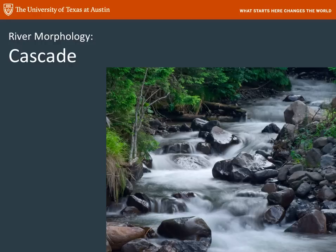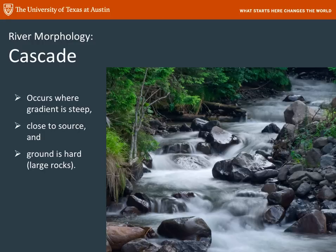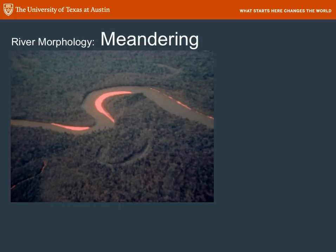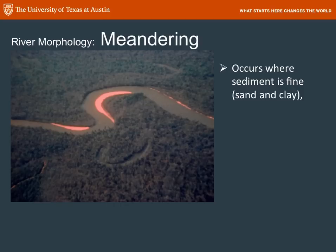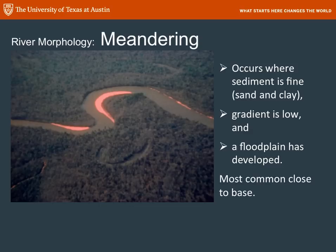Another kind of river shape found up near the headlands in the mountains, where the gradient is really steep and you're close to the source, is a cascading river. It happens when the ground is hard and there are large boulders around. As you get down towards the base, the river tends to meander. Meander is an interesting word — it's actually the name of a river in ancient Greece, now in Turkey. It has entered English simply meaning to wander aimlessly on a winding path. A meandering river occurs where the sediment is very fine — sand and clay — the gradient is low, and the floodplain is well developed. Meandering rivers are more common near the base, and we see a lot of them along the Gulf Coast in Texas, Louisiana, Mississippi, and Alabama.